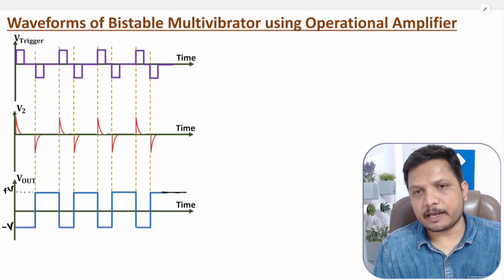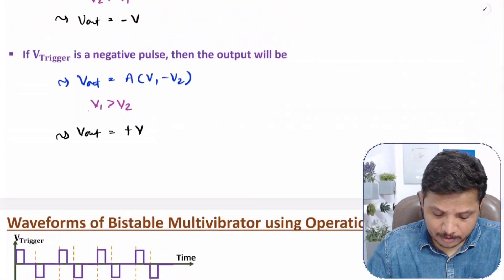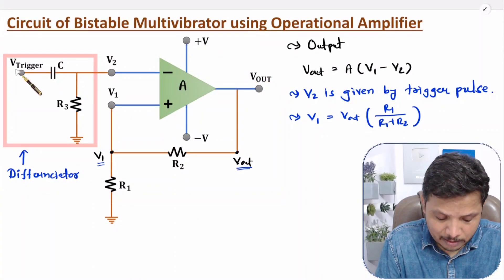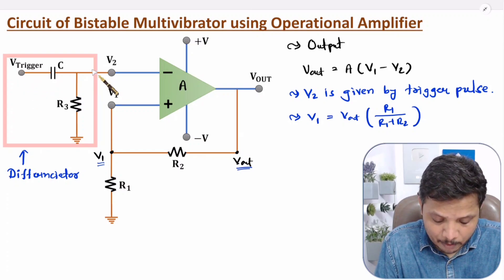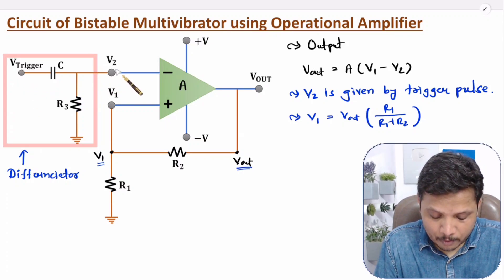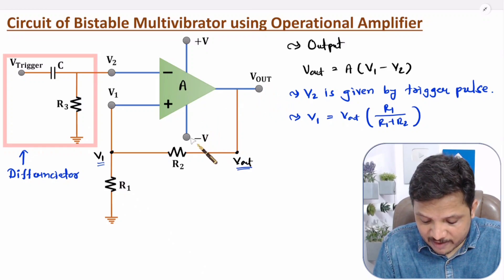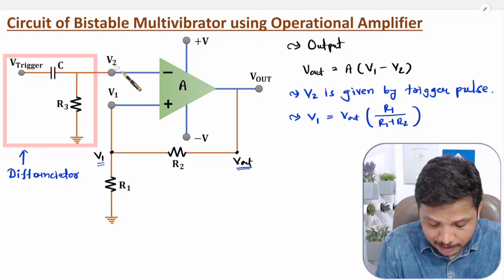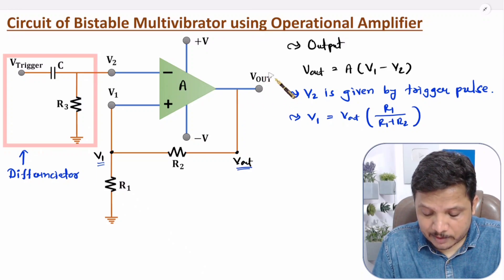I hope now you have a fair enough idea about what bistable multivibrator is. In bistable multivibrator, output changes based on V trigger pulse. If you give a positive pulse, then a positive spike will appear. A positive spike at the negative terminal will make the output negatively saturated to minus V. If you give a negative spike, then the negative spike at the negative terminal will make the output saturated to plus V voltage.